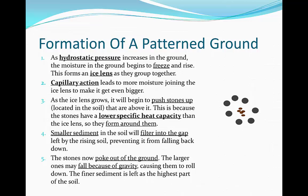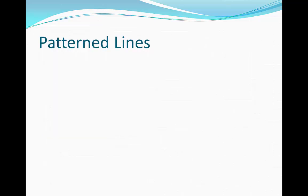As all of the stones get moved out, they form a pattern, maybe like a polygon, and the sediment is left where they used to be. This is what an example of a pattern polygon in the patterned ground formation looks like. As we can see, there are a lot of big stones which have been moved up due to frost heave from the ice lenses, and the finer sediment has been left in its place. This leaves a pattern in the ground.